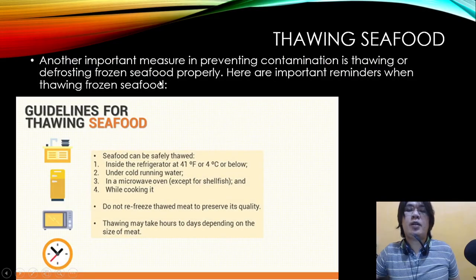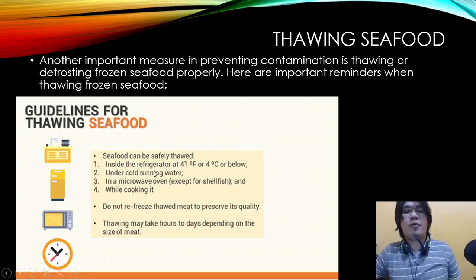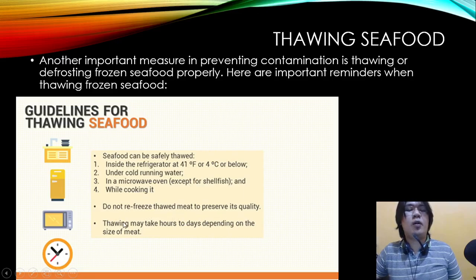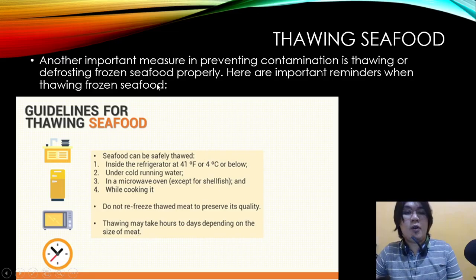Another important measure in preventing contamination is thawing or defrosting frozen seafood properly. Guidelines for thawing seafood: seafood can be safely thawed inside the refrigerator at 41°F or 4°C or below, under cold running water, or in the microwave oven — except for shellfish — or while cooking. Do not refreeze thawed meat to preserve its quality. Thawing may take hours depending on the size of the meat; the bigger the item, the longer it takes to thaw.